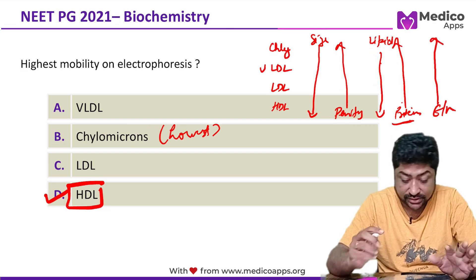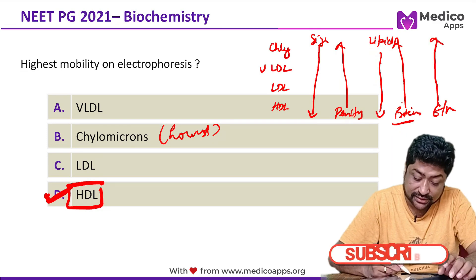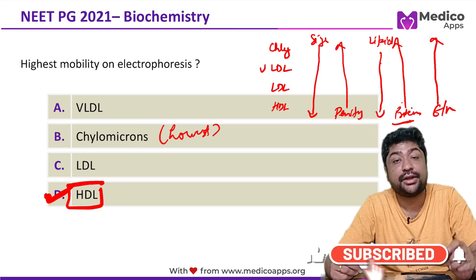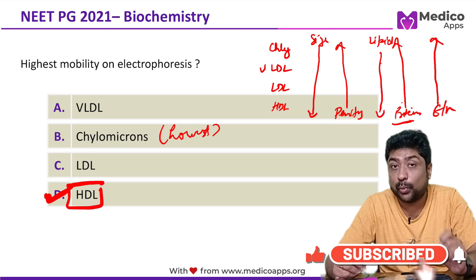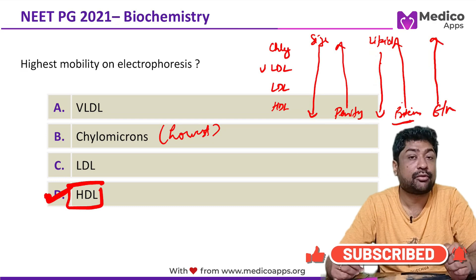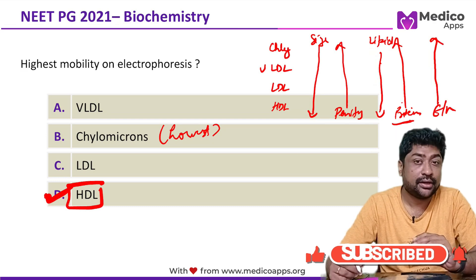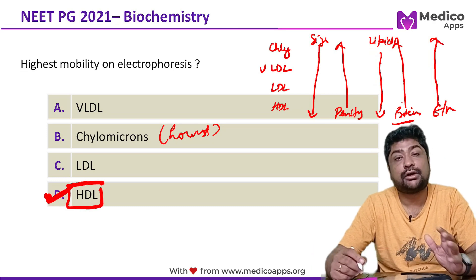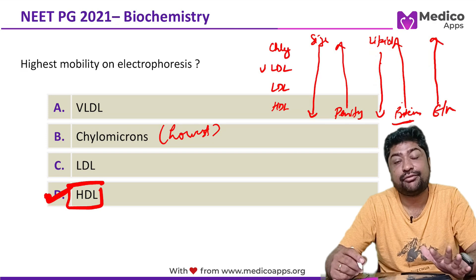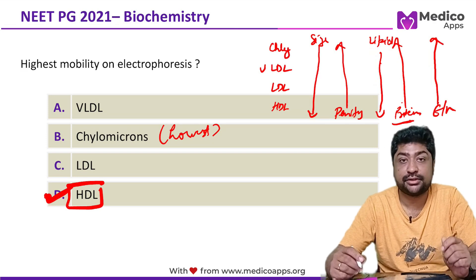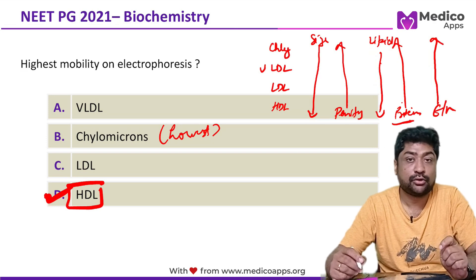Coming back to the question: highest mobility on electrophoresis is seen in HDL. The correct answer is HDL. This is a very important, high-yield topic from biochemistry, and at least one question in every exam can be expected from this topic.